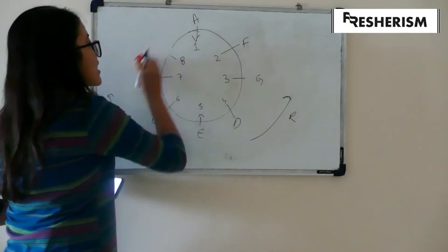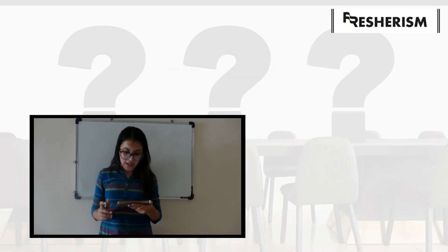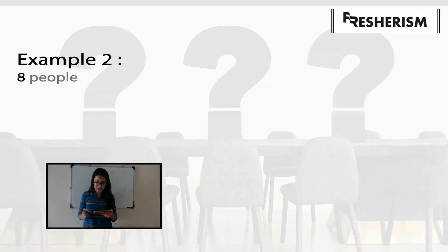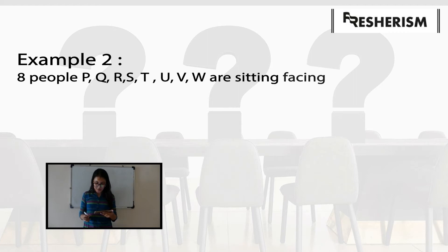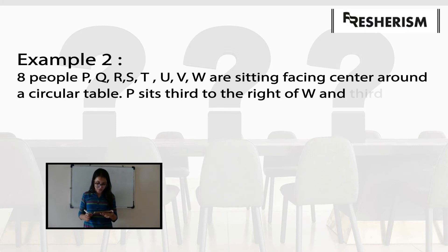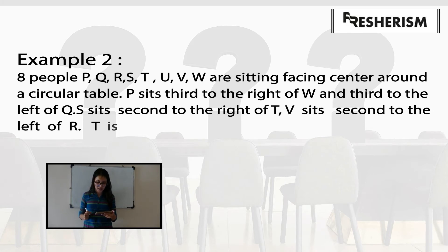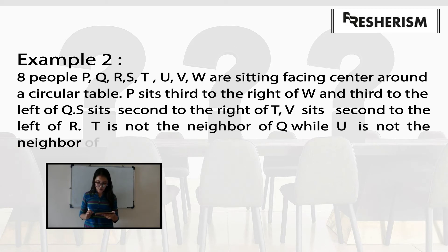Let us take another question as an example. This question tells us that 8 people — P, Q, R, S, T, U, V, W — are sitting facing the center around a circular table. P sits third to the right of W and third to the left of Q. S sits second to the right of T. V sits second to the left of R. T is not the neighbor of Q, while U is not the neighbor of T nor W.